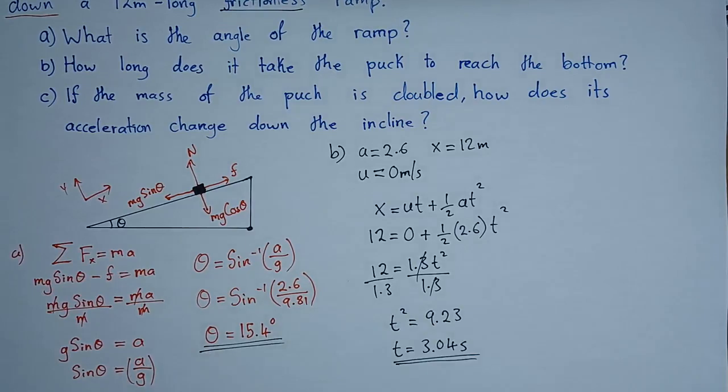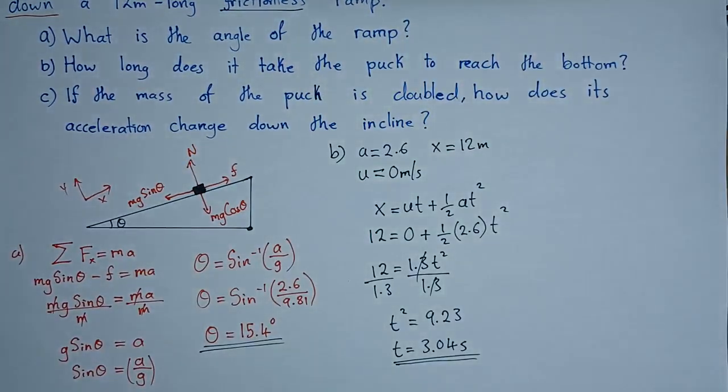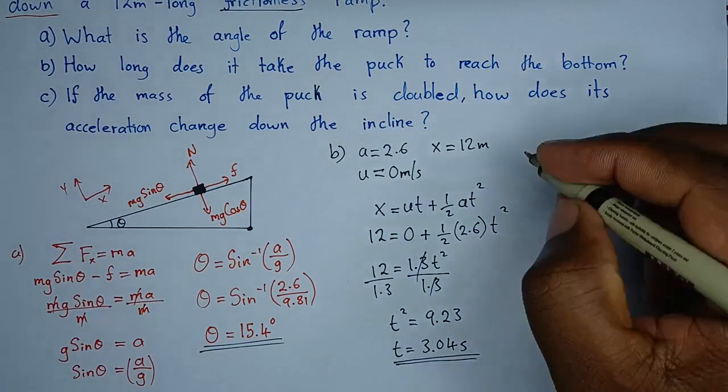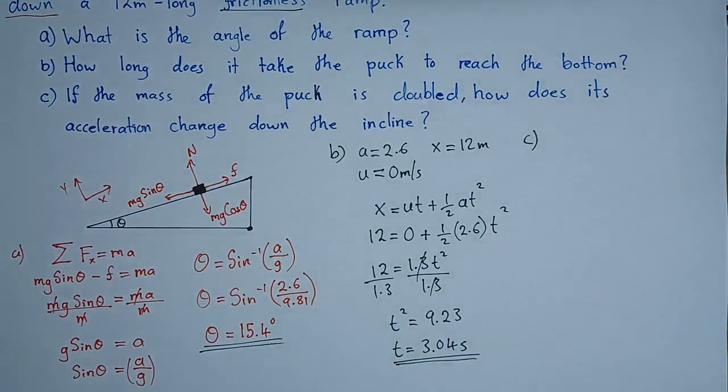Remember, the angle is this one here. The last question says, if the mass of the puck is doubled, how does its acceleration change down the incline? Okay. So, the idea here is, given that the mass of the puck maybe was 12 kilograms, then it's doubled to 24.